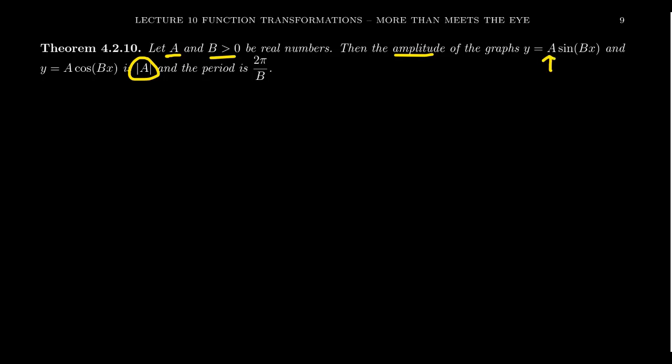If that number is positive, then no reflections happen. But if that number was negative, the amplitude will be its absolute value, but the negative in front will cause the graph to be reflected across the x-axis.